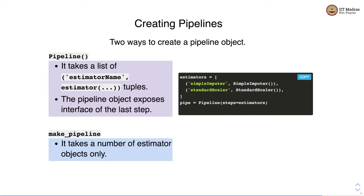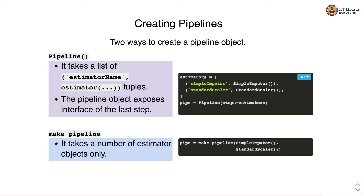Another way to construct a pipeline object is the make_pipeline method. It takes a number of estimator objects directly — we don't need to give tuples as in the pipeline constructor. For example, we can specify the same pipeline by providing the simple imputer transformer as the first step and the standard scalar transformer as the second step.